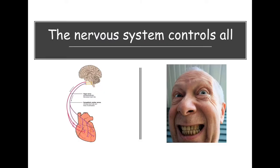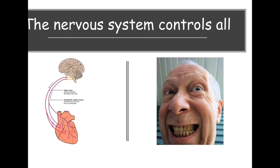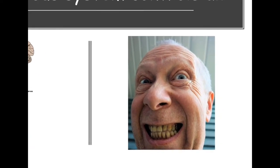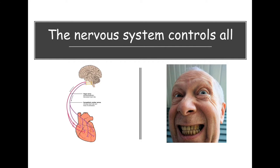The nervous system controls everything about you, whether it's an organ on the inside like your heart or your lungs. Your brain as well as the spinal cord will send divisions to regulate it. You see how the cheeks and eyes and everything — all the muscles contracting — that's also controlled by your nervous system. So how you walk, speak, when you chew — everything about you, whether it's voluntary or involuntary, is controlled by your nervous system.